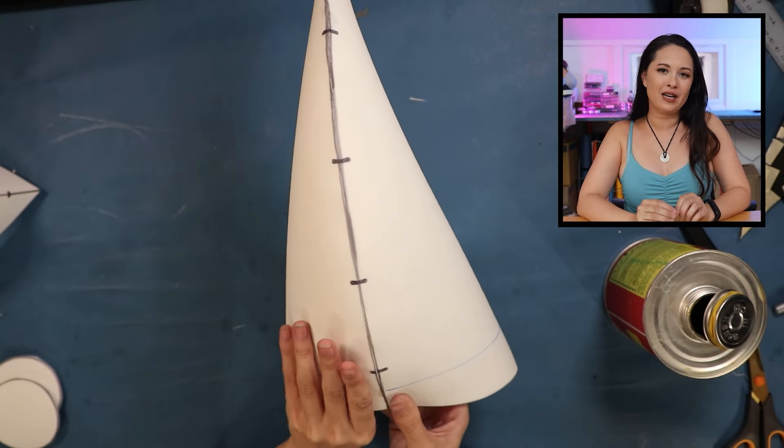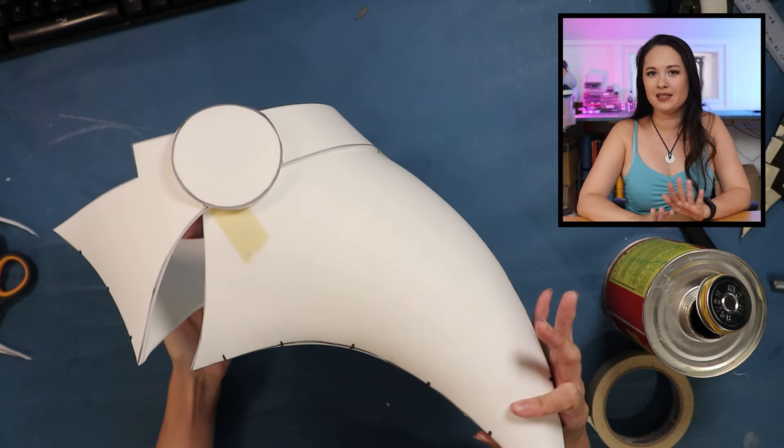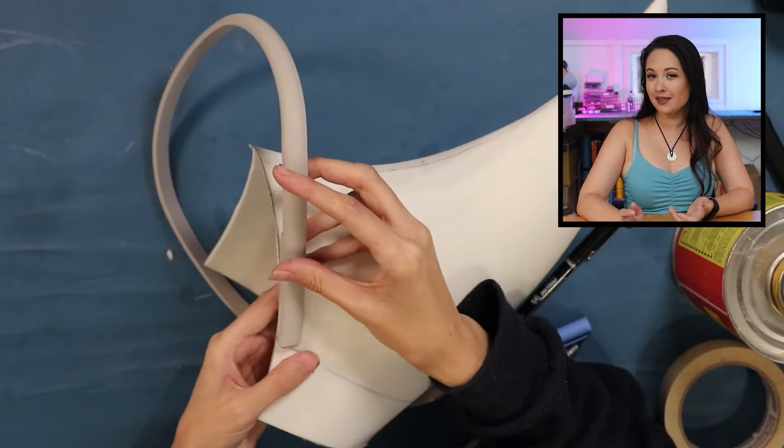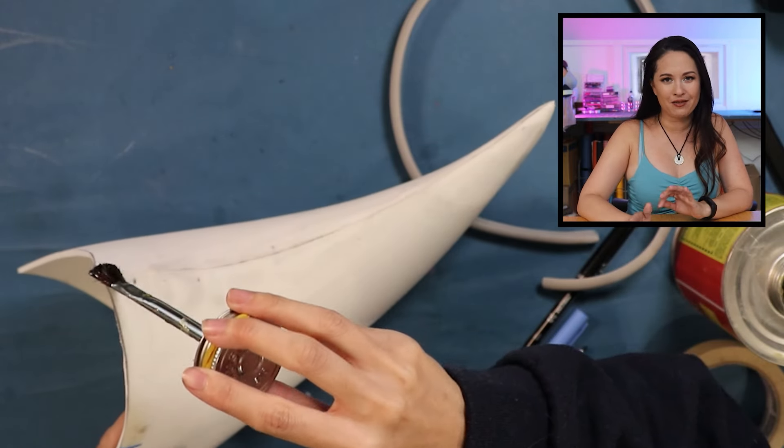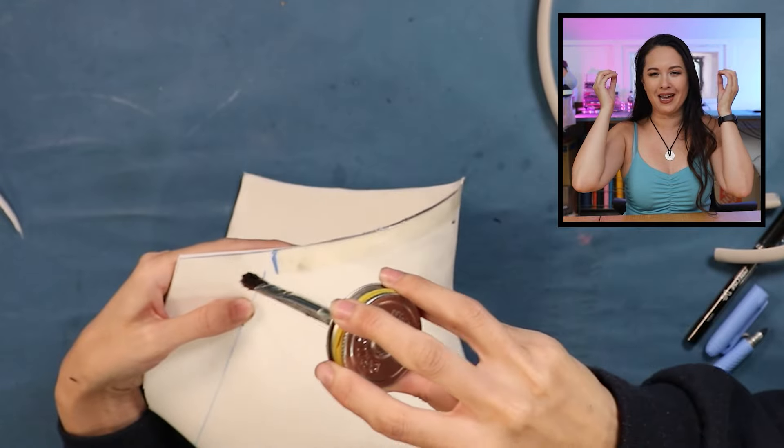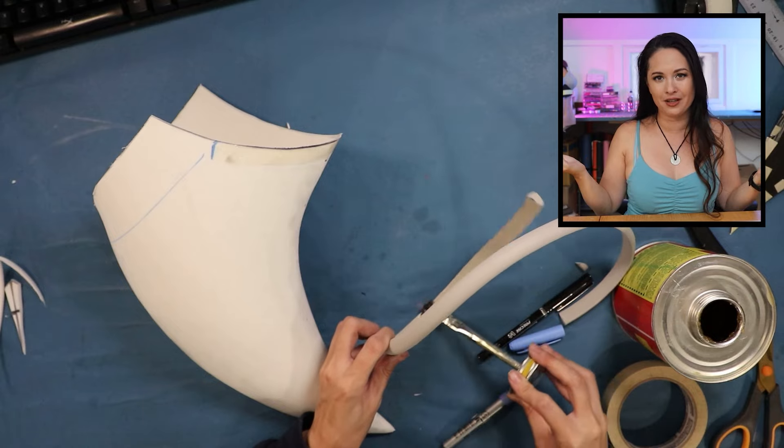Before I actually glue the visor to the base of the hat, I'm going to tape it in place and outline it, just to make sure that everything fits into place nicely. If yours doesn't line up quite right, don't worry. You could just add a piece of foam to the back of the visor. I don't recommend making the hat base smaller. It's better to just make the visor part bigger, unless the thing doesn't fit your head.